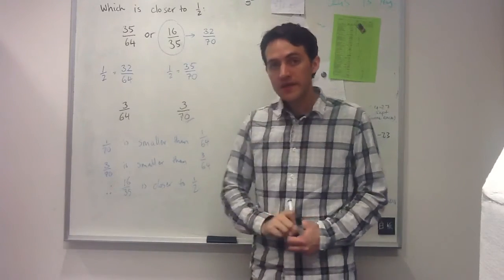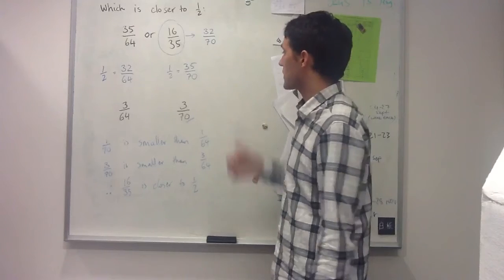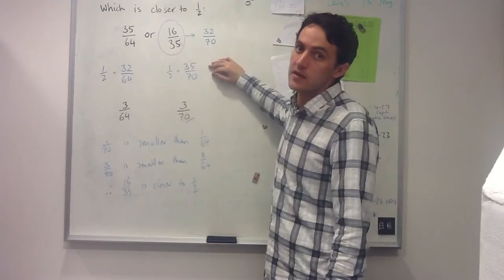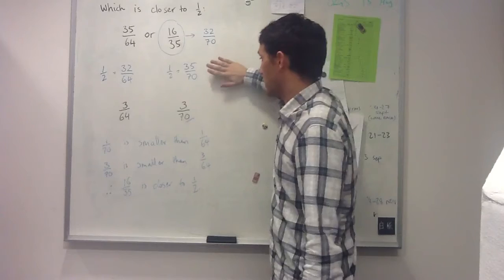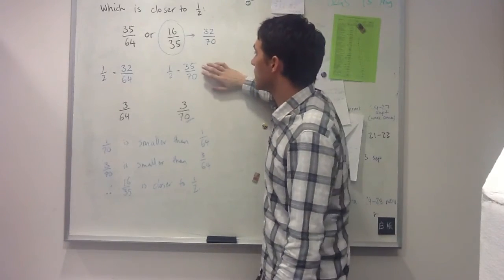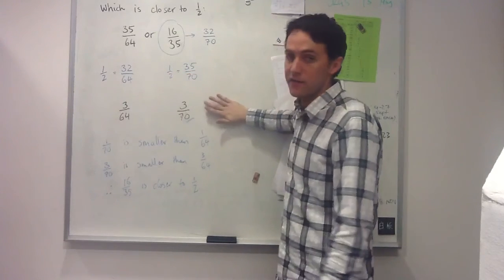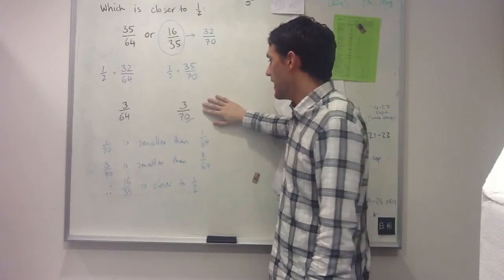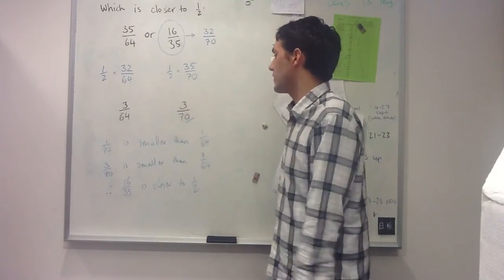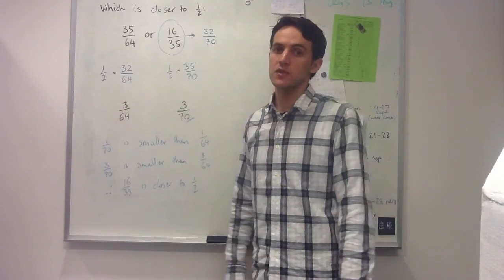The basic elements of working through this sort of problem: firstly, finding an equivalent fraction for a half so that we can determine exactly how far away these numbers are, and then comparing these two numbers based on the relationship with denominators.